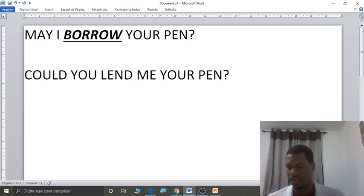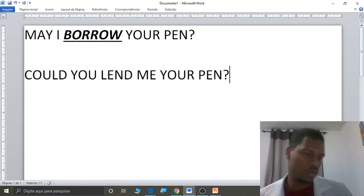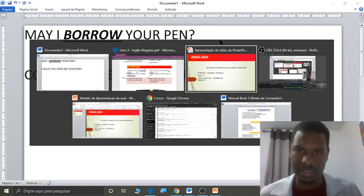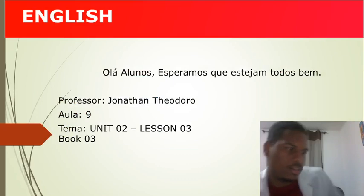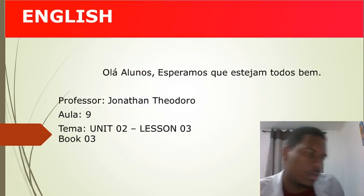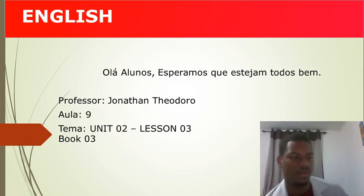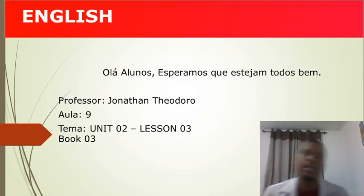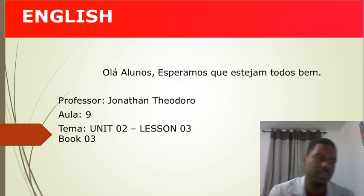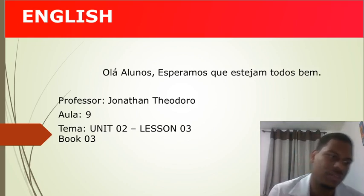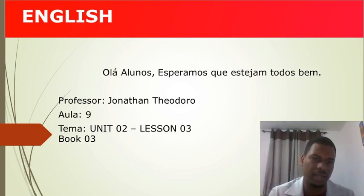Alright, students — homework! On page 93, unit two, lesson three, you have three exercises: exercise 1 — complete the sentences with the missing words (they're already given); exercise 2 — unscramble the sentences, putting them in order; exercise 3 — a matching exercise where you match sentence halves by writing the correct letter.